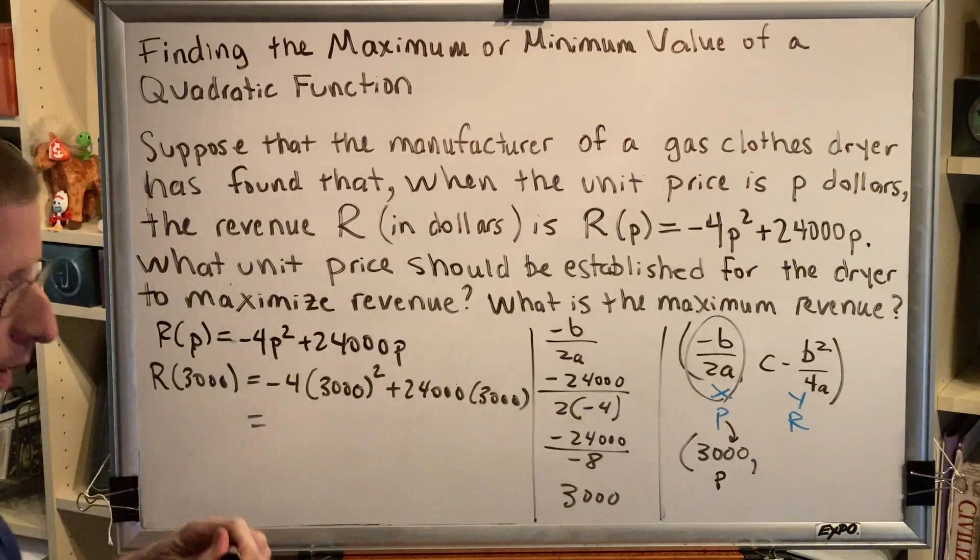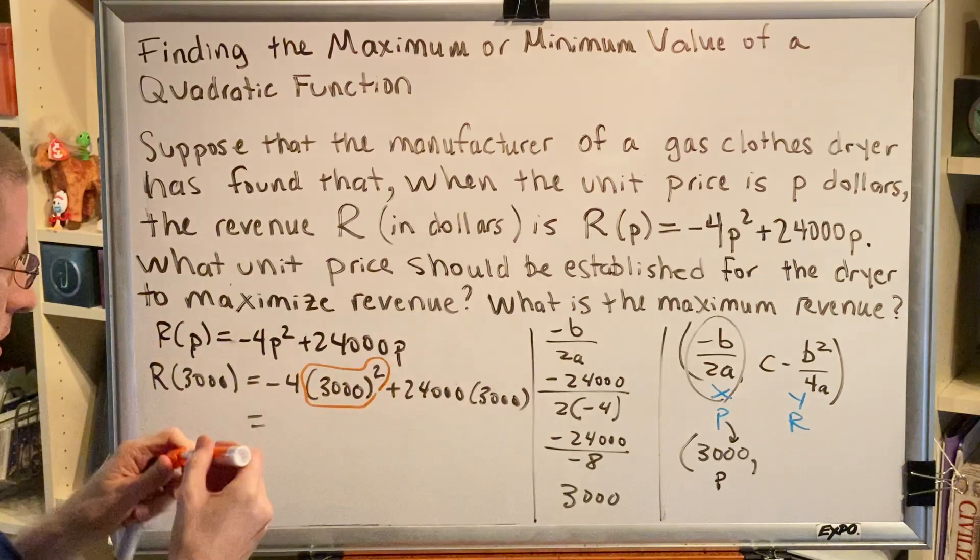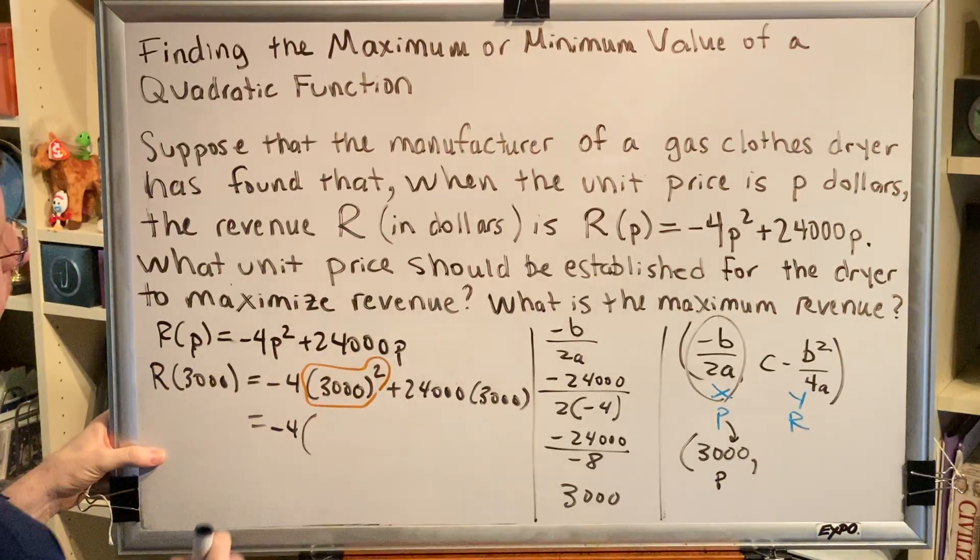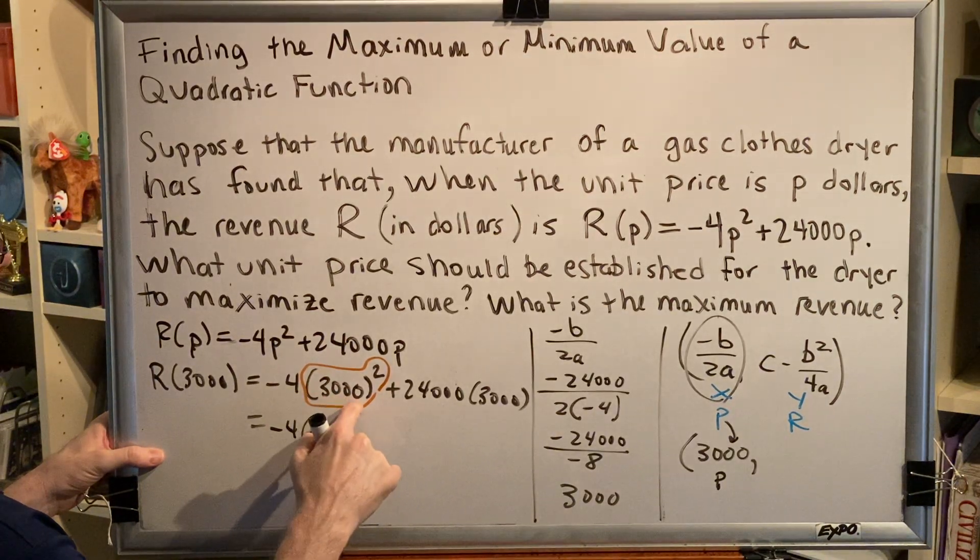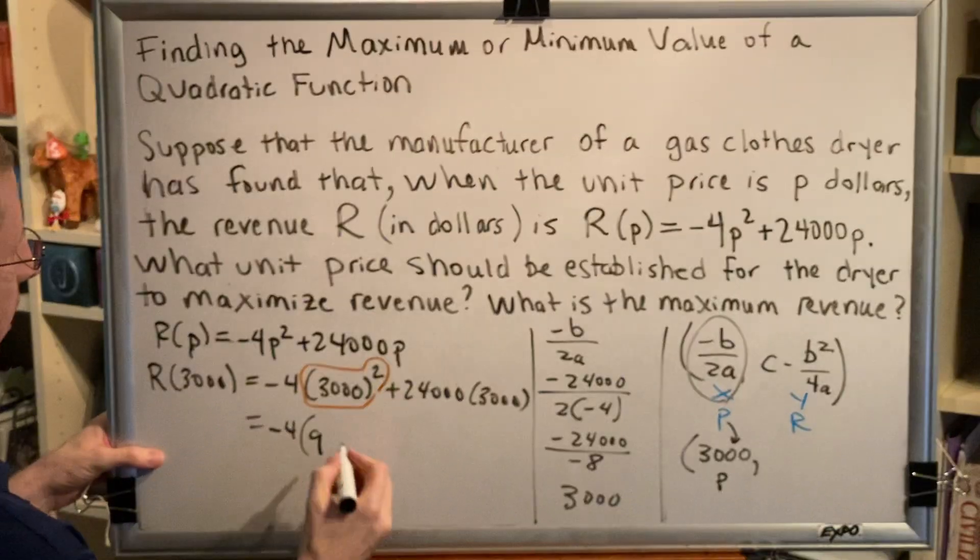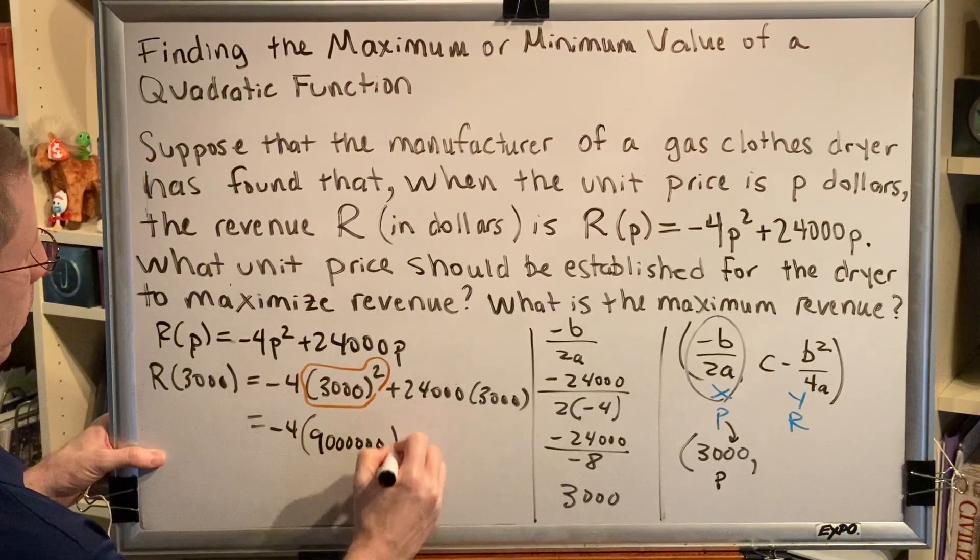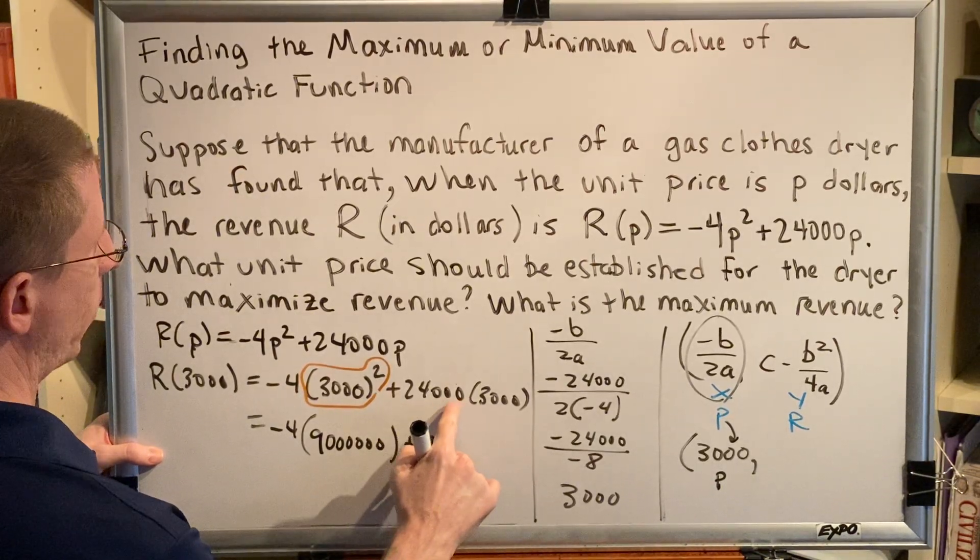Following order of operations, the first thing we have to compute is 3,000 squared. So that's going to be negative 4 times, 3 squared is 9, but there are 3 extra zeros in each thing, so we're going to have 6 zeros here.